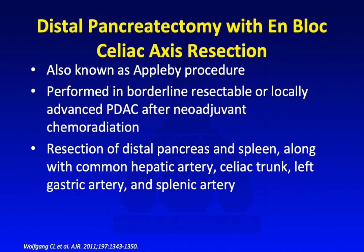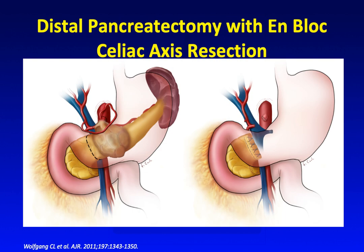A variation of the distal pancreatectomy is the one with en-bloc celiac axis resection, also known as the Appleby procedure, usually performed in borderline resectable or locally advanced PDAC after neoadjuvant chemoradiation. It's an extensive surgery involving resection of the distal pancreas and spleen, along with the common hepatic artery, celiac trunk, left gastric artery, and splenic artery. After ligating the celiac axis, these patients are dependent on collateral flow through the SMA up the GDA to perfuse the hepatic artery and liver.